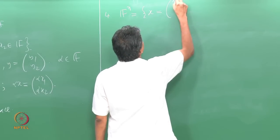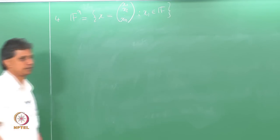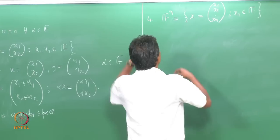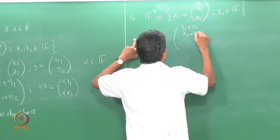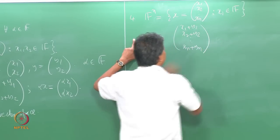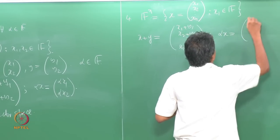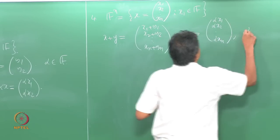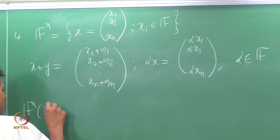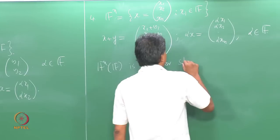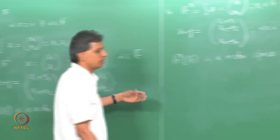More generally, Fⁿ is the set of all column vectors x = (x₁, x₂, ..., xₙ)ᵀ where each xᵢ comes from the underlying field F. Addition is coordinate-wise: x + y = (x₁ + y₁, ..., xₙ + yₙ)ᵀ, and scalar multiplication is similarly coordinate-wise. One can show that Fⁿ over F is a vector space.